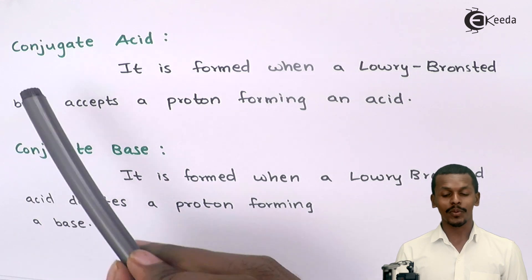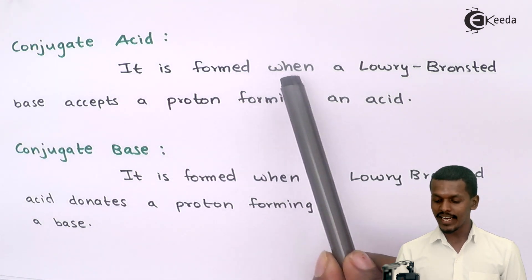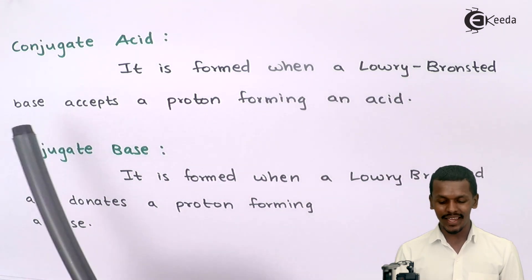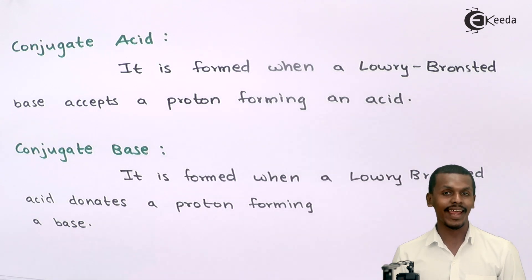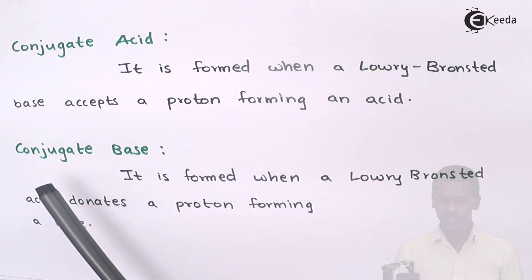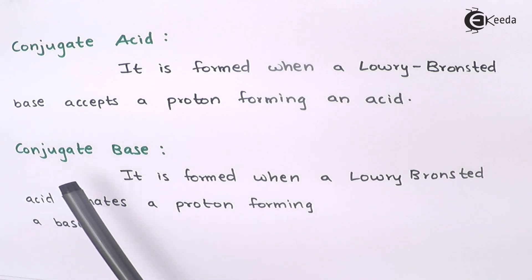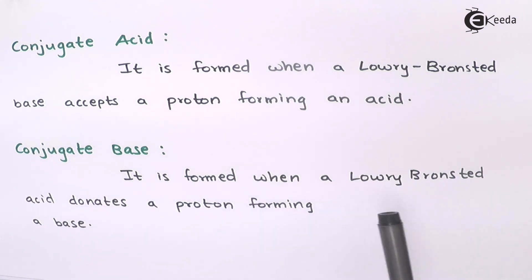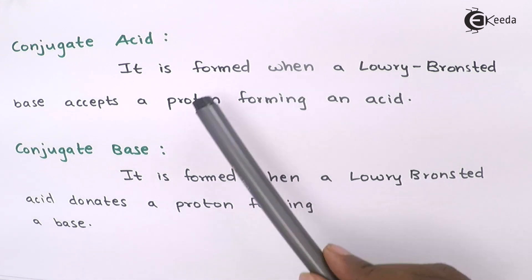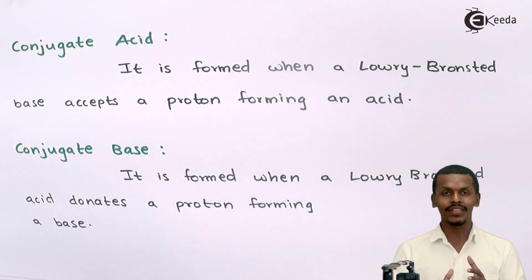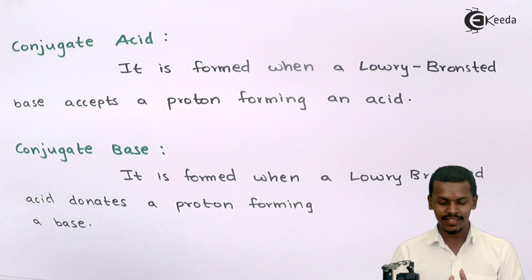A conjugate acid is formed when a Lowry-Bronsted base accepts a proton, forming an acid. A conjugate base is formed when a Lowry-Bronsted acid donates a proton, forming a base. Let us talk about this with the help of an example to clear these concepts, as it is very important to understand conjugate acid and conjugate base.